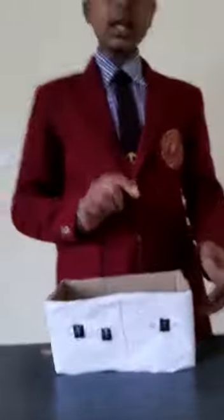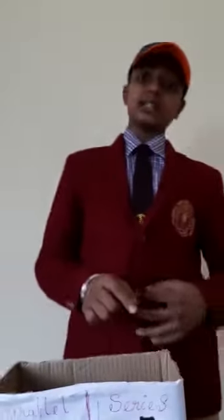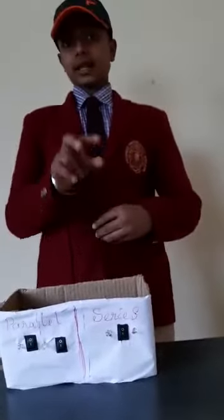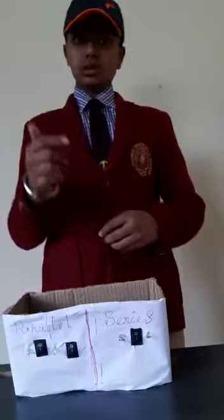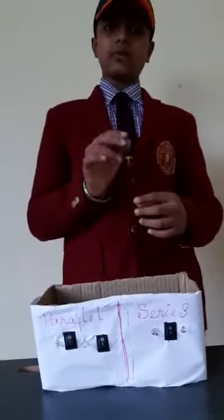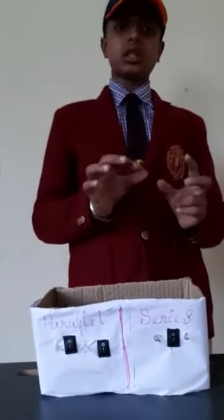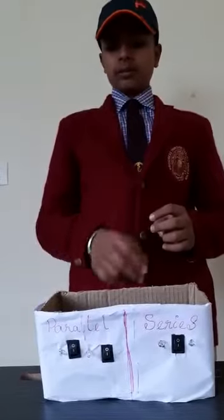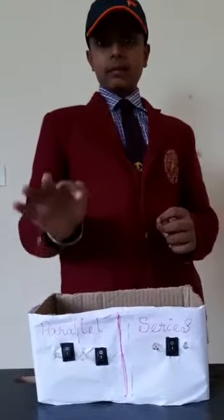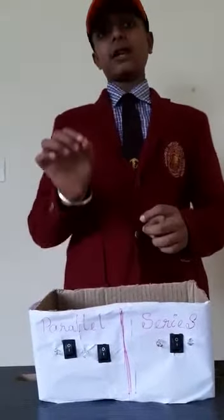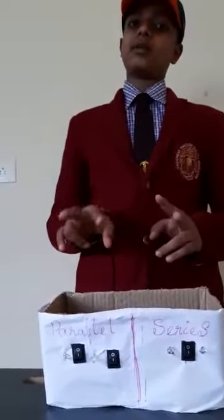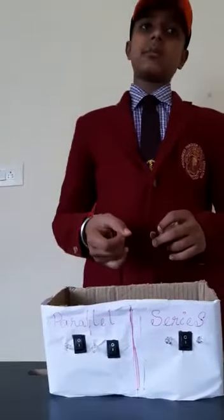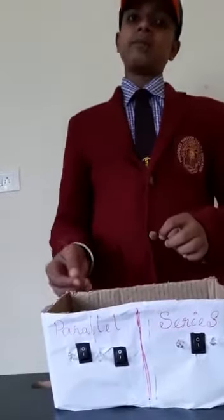In series connection, as we can see, two bulbs are connected together using one wire. If that one wire has any loose connection or any problem, both bulbs also stop glowing. Here in parallel connection, they are connected with two different wires. So if any one wire is damaged, the other bulb keeps on glowing.